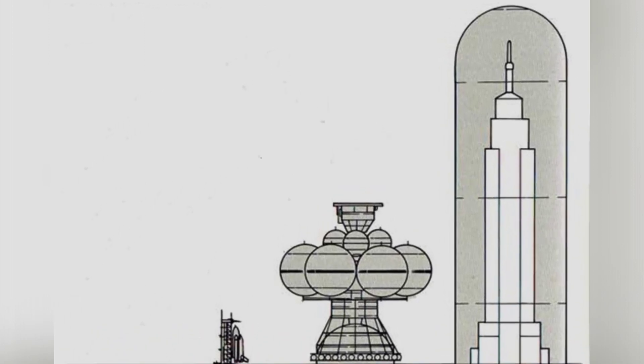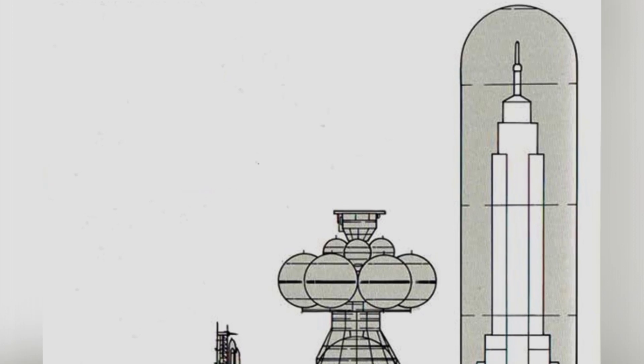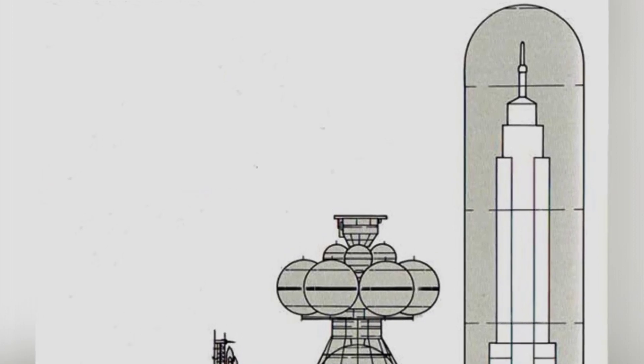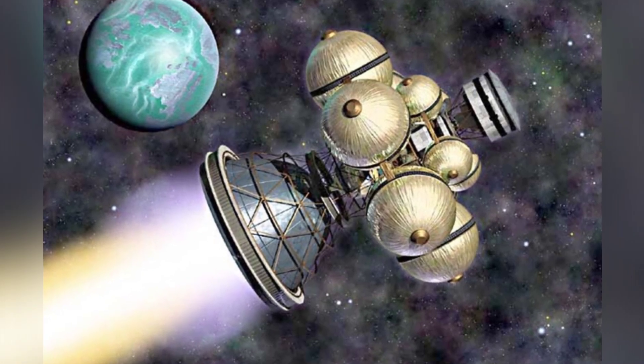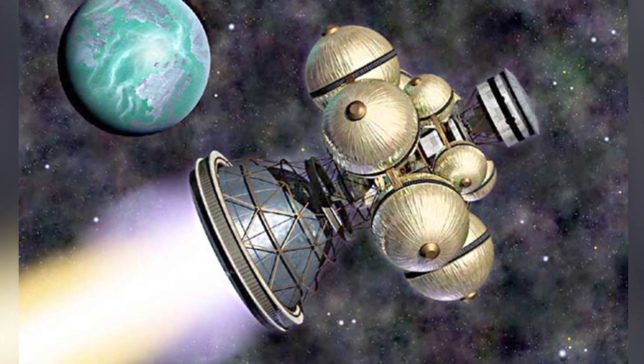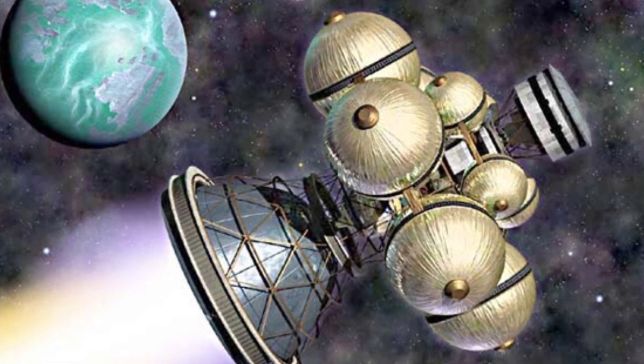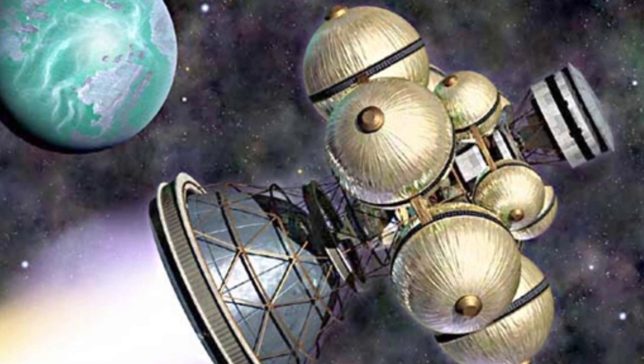Although the Daedalus plan is grand, it is only a plan on paper. Even at that time, not only Great Britain, but also the other two powerful superpowers at the time were unable to implement it. Therefore, the plan had to be shelved, but it gave rise to two other plans named Longshot and Icarus.